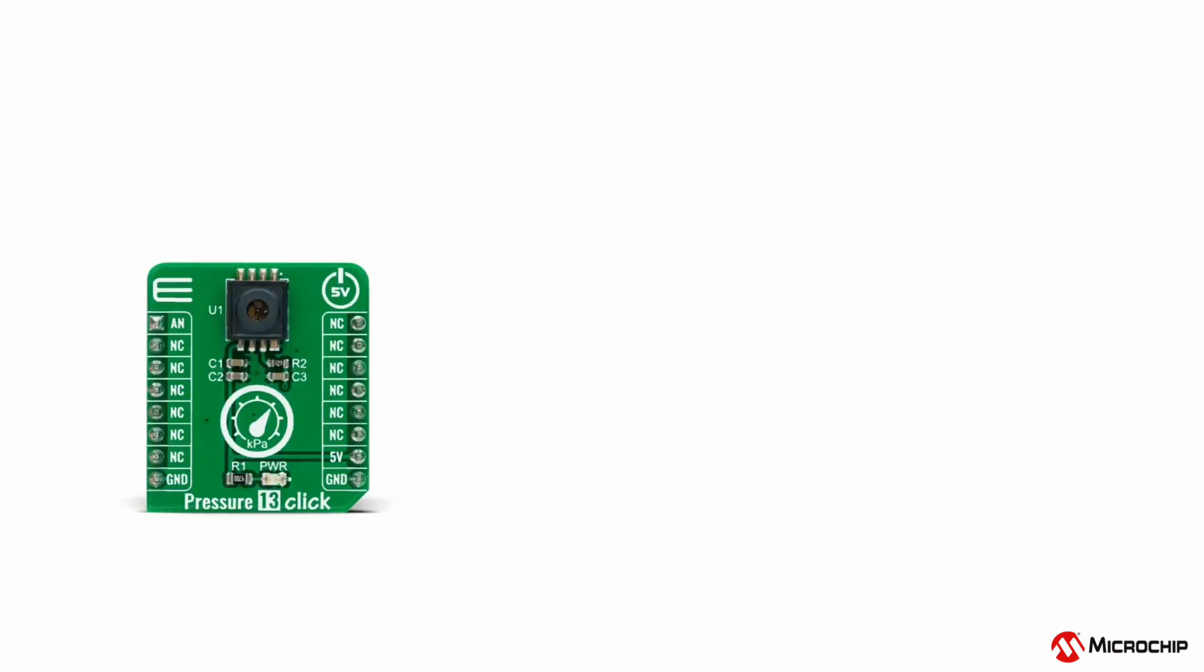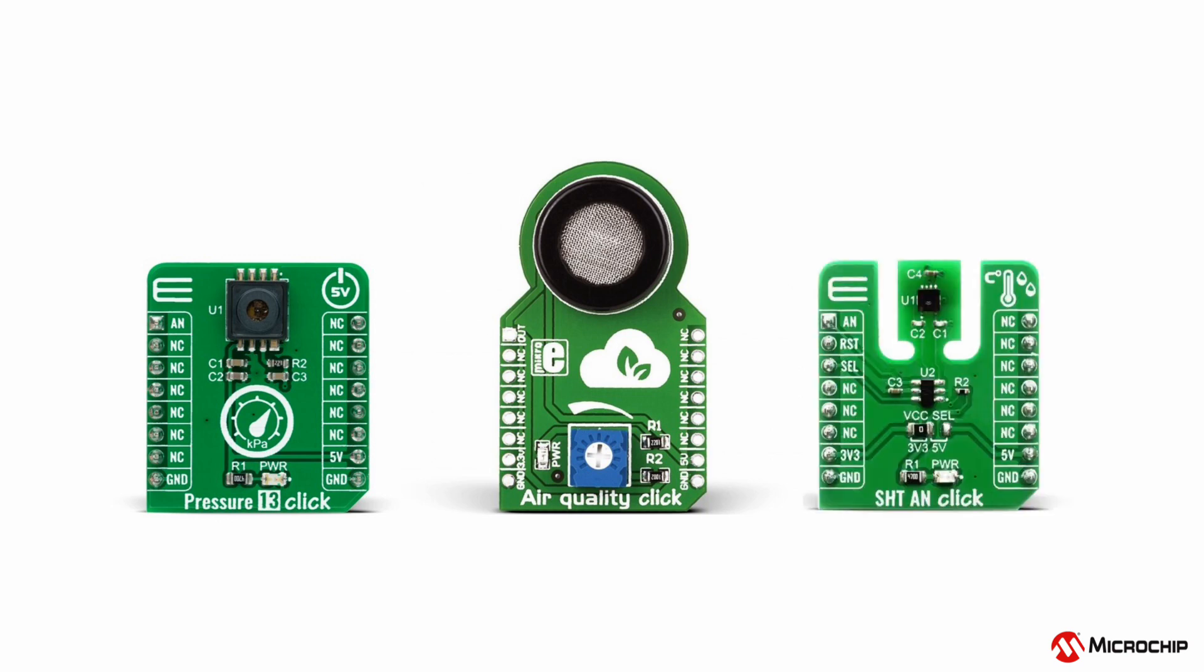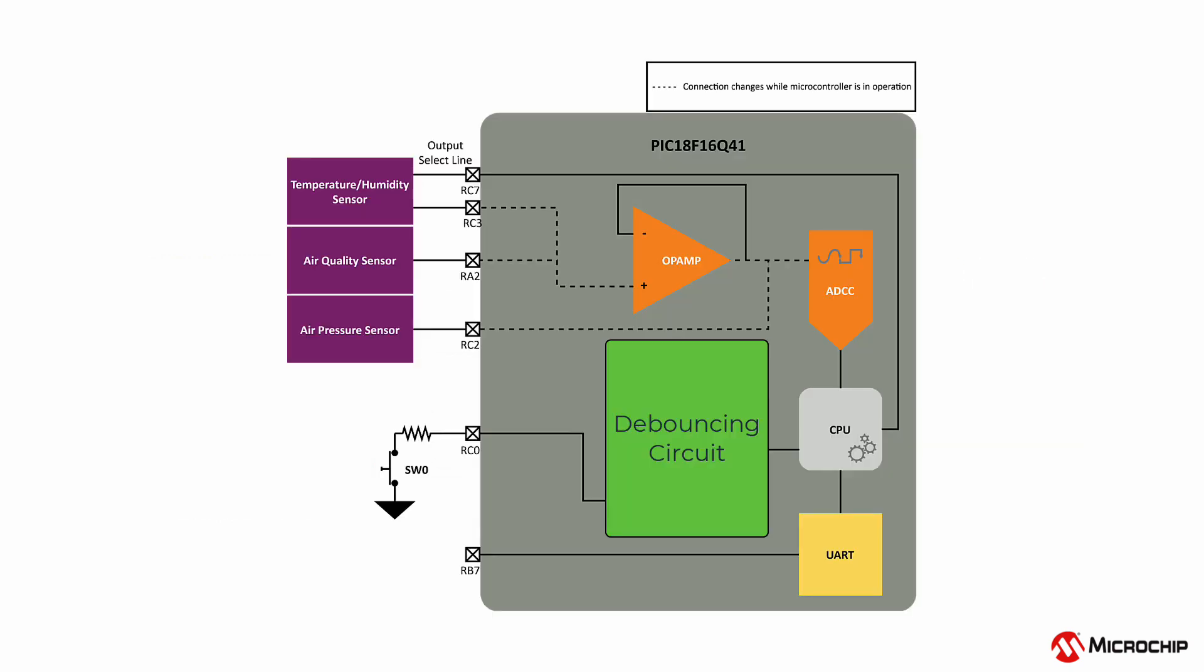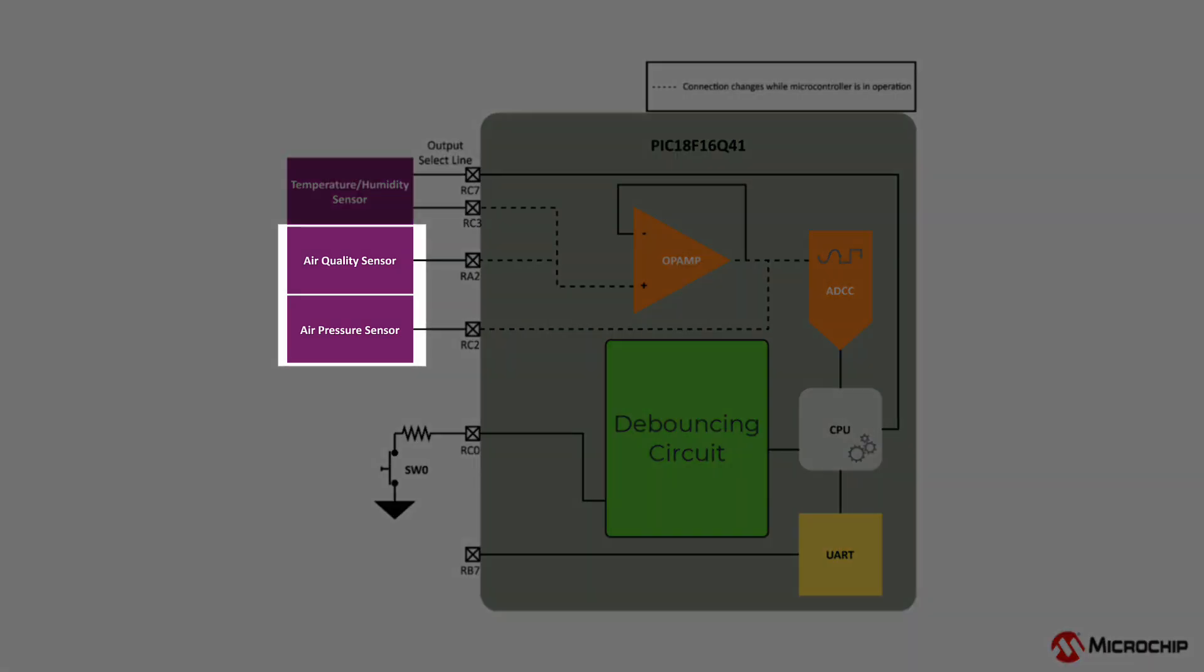The pressure 13 click, the air quality click, and the SHT-AN click. The Q41's integrated op-amp serves to buffer the signal for both the air quality click and the SHT-AN click.